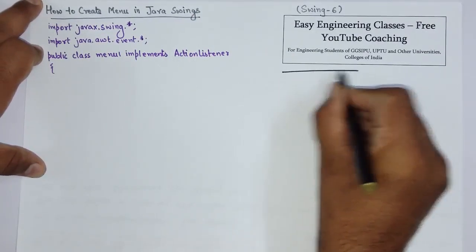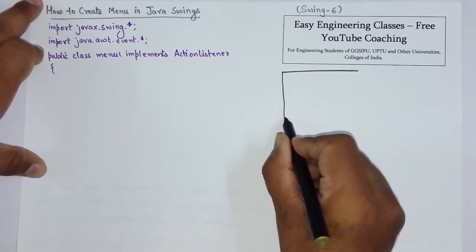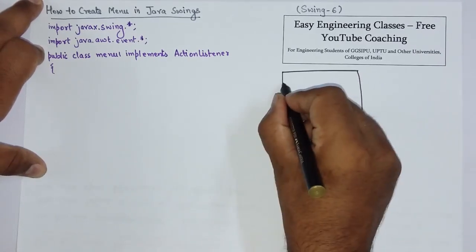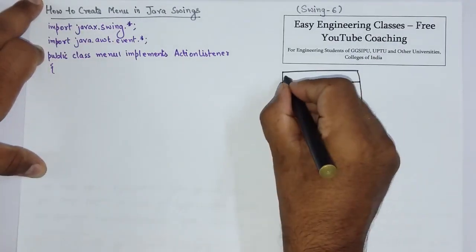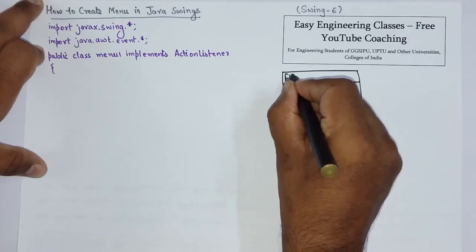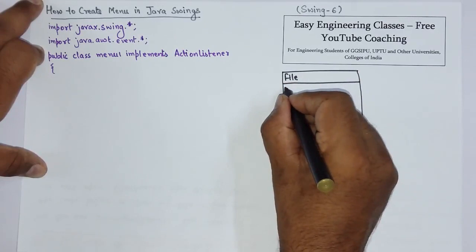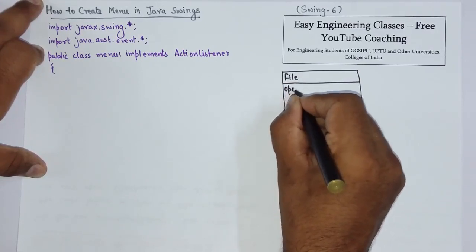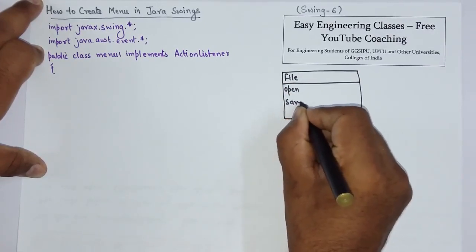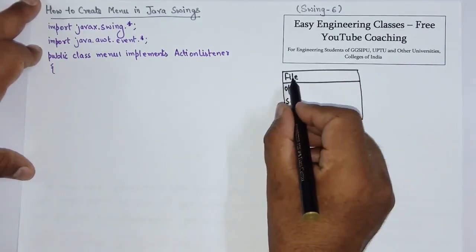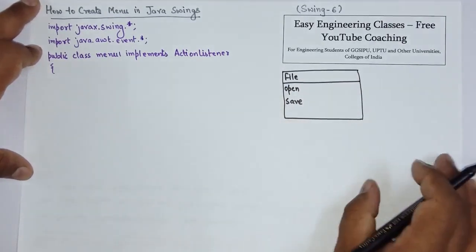So I will draw a sample window. Suppose I have to add a menu file and in this file there are certain menu items like open and save. So I will create a structure in which I have open and save.